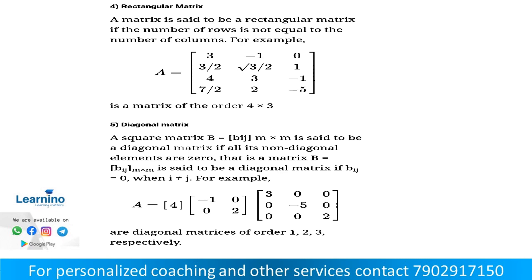We define a diagonal matrix. For example, A is equal to a matrix where the diagonal elements are non-zero and all other non-diagonal elements are 0. For example: [3, 0, 0 / 0, -5, 0 / 0, 0, 2]. The diagonal elements are -1 and 2, and the non-diagonal elements are 0. So this is a diagonal matrix.